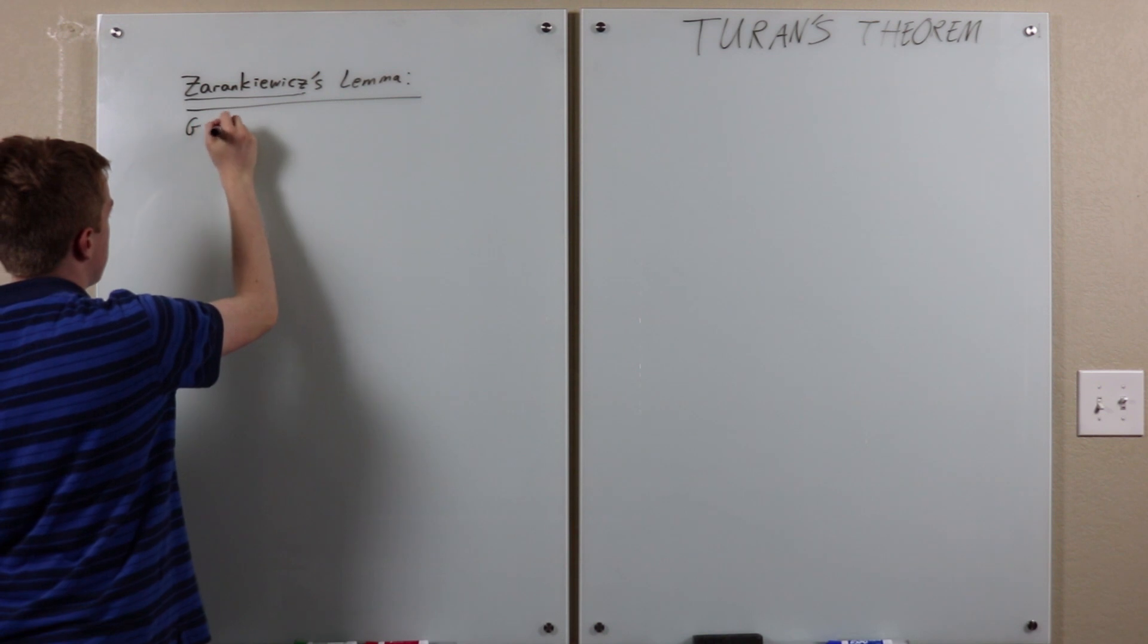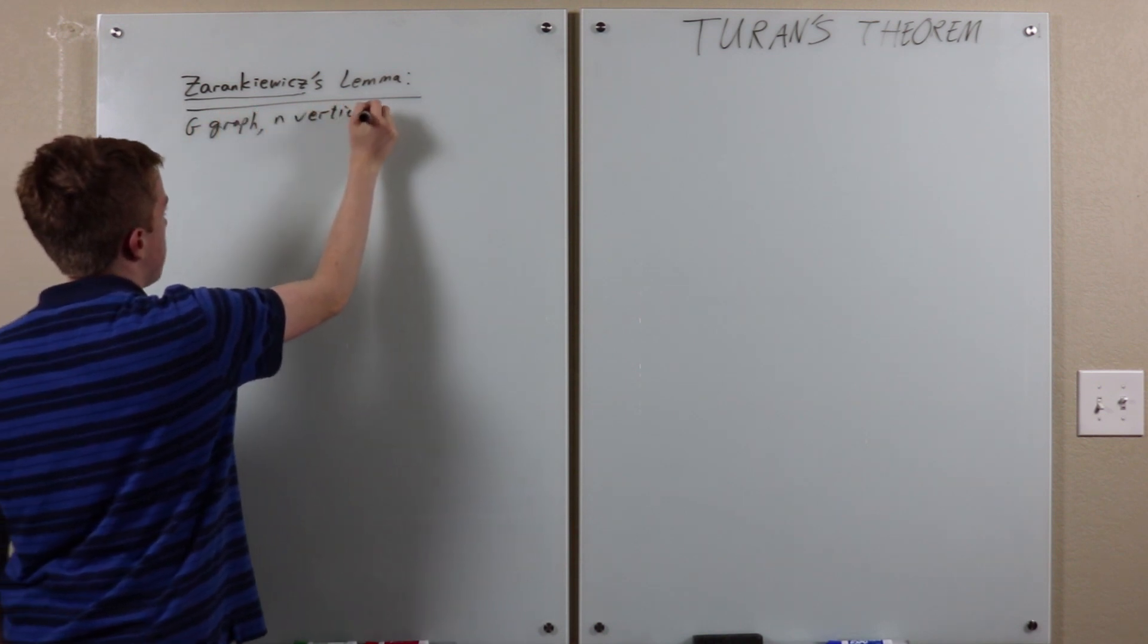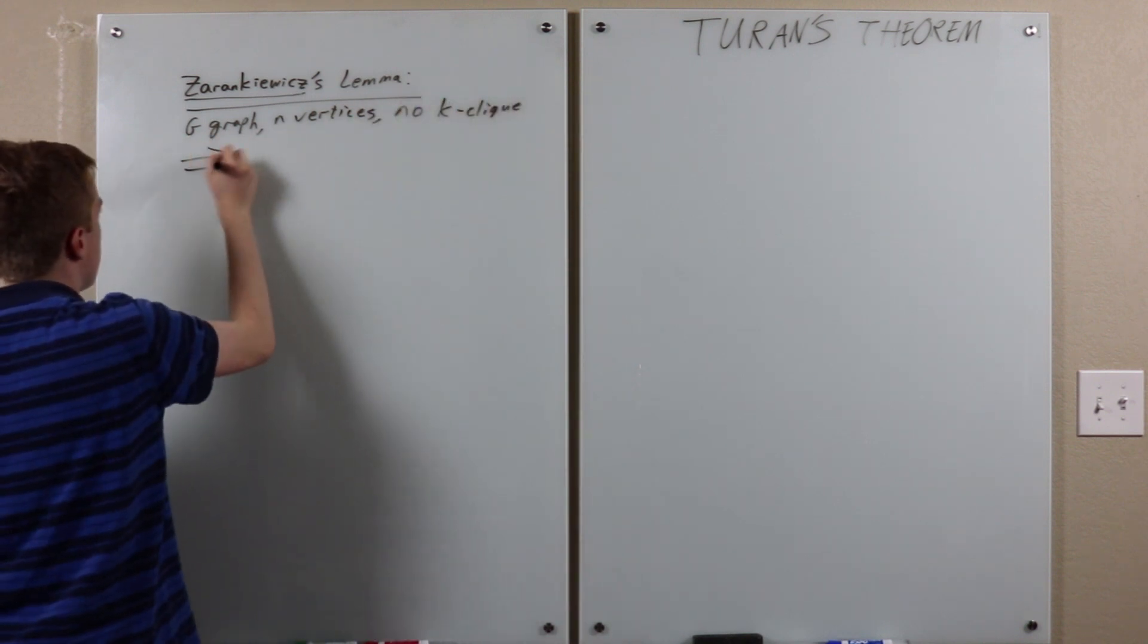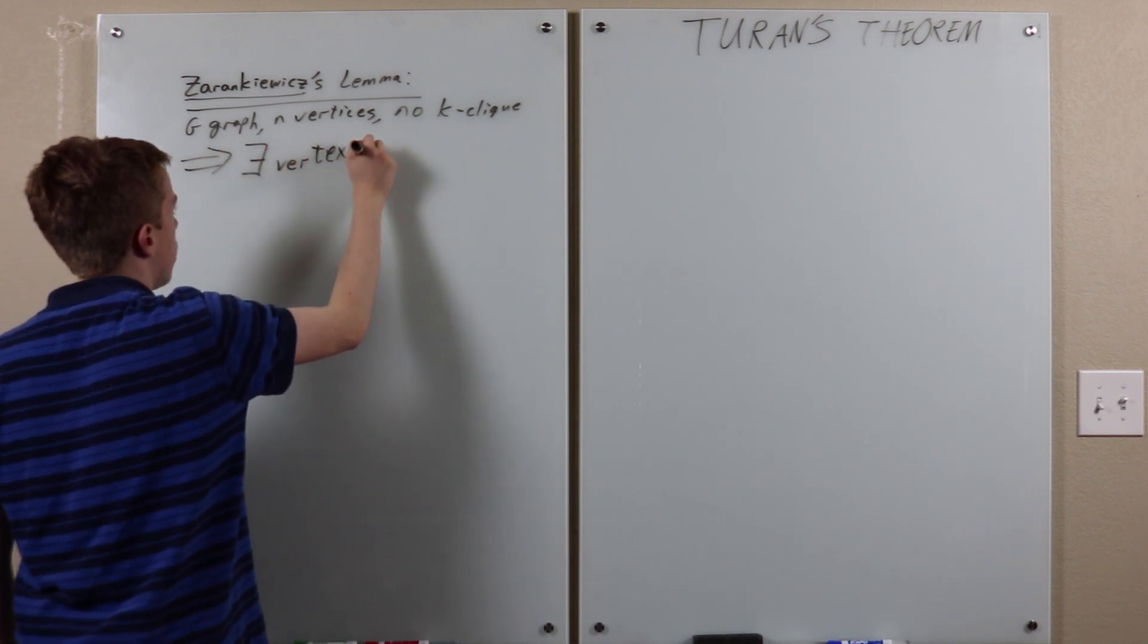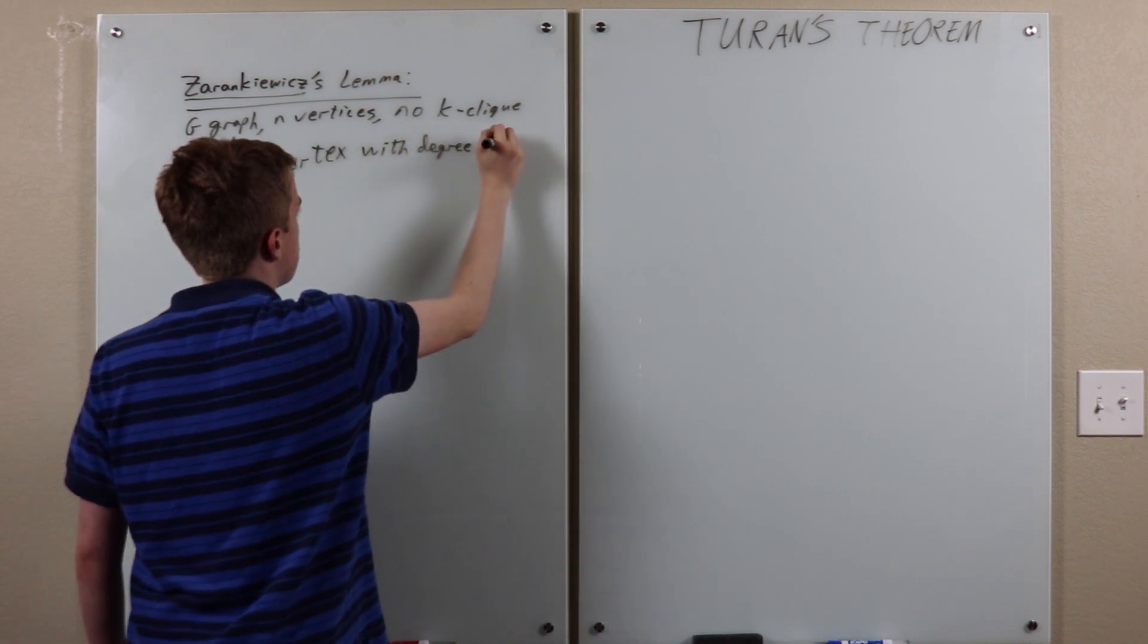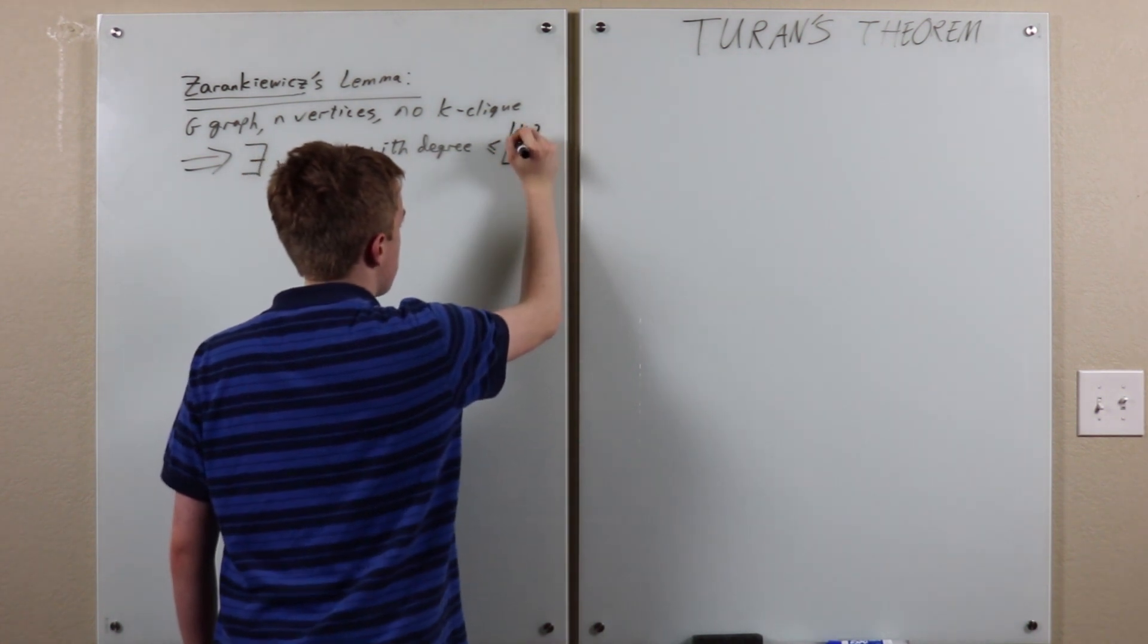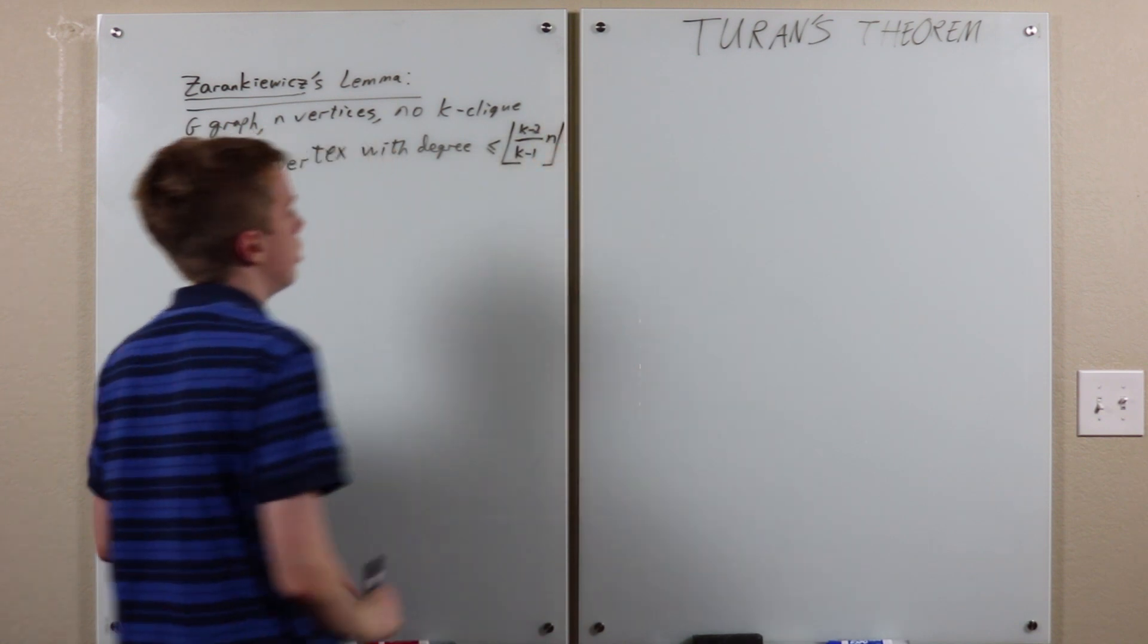So, it is, G is a graph, n vertices, no k-clique, as in the hypotheses. But then the lemma is, then there exists a vertex with degree less than or equal to the floor of k minus 2 over k minus 1 times n. And then the floor of that.